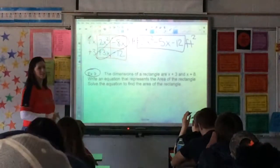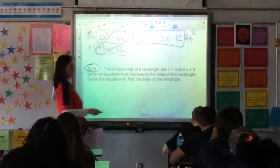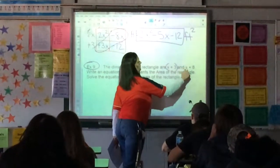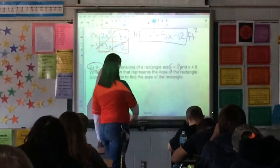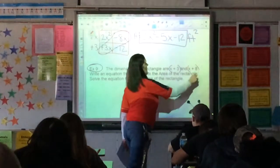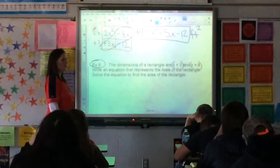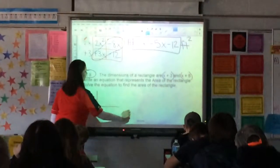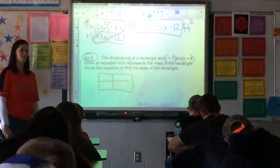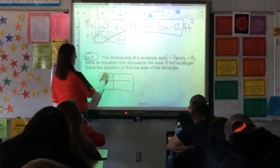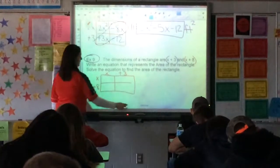Number 9 is the same thing. There's just no picture to go with it. It's just all words. So you are looking at your dimensions, which are x plus 3 and x plus 8. It doesn't matter which one's the width and which one's the length. Just make sure that you keep your groups together. So x plus 3 and x plus 8. Set it up and you're ready to foil.